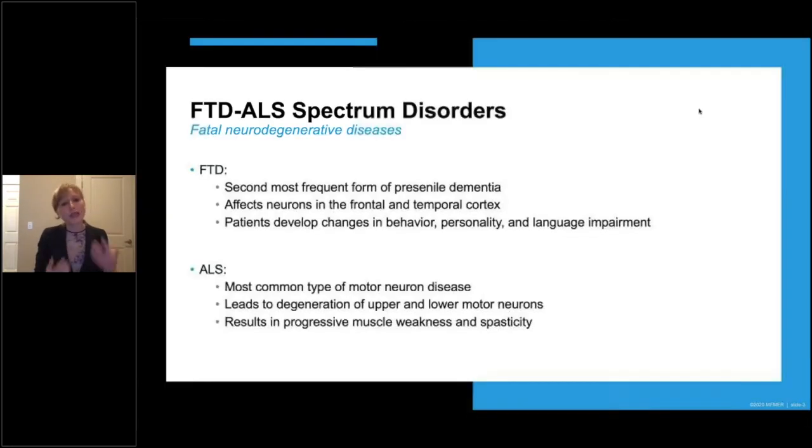A repeat expansion in C9ORF72 is associated with two diseases, FTD, Frontal Temporal Dementia, and ALS, Amyotrophic Lateral Sclerosis. FTD is the second most frequent form of dementia in individuals below 65 years of age. It affects neurons in the frontal and temporal cortex, resulting in changes in behavior, personality, and language impairments.